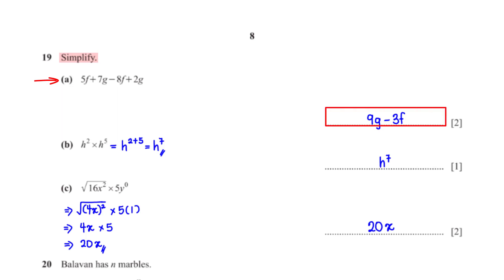Simplify 5f + 7g − 8f + 2g. Grouping like terms: 7g + 2g = 9g, and 5f − 8f = −3f. So the answer is 9g − 3f.